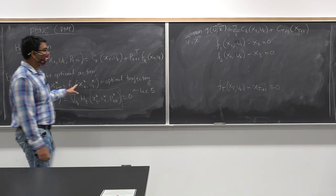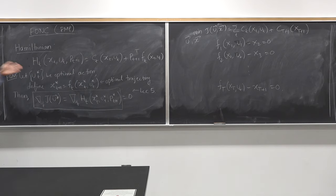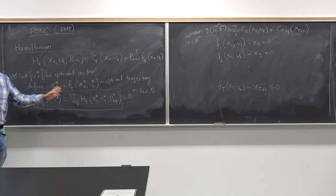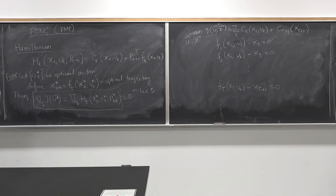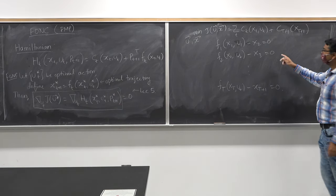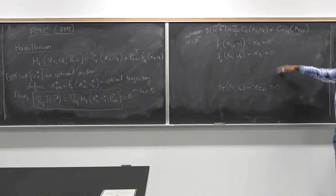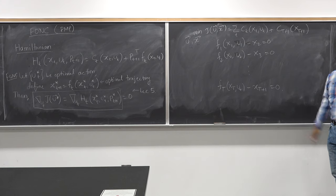Instead of considering the unconstrained optimization problem that required a couple of lectures to arrive at, we might have as well said two classes back: why don't we assume that I'm not just optimizing u but also optimizing x, subject to the constraint that x follows the state transition function? That would look like a constrained optimization problem we are all familiar with.